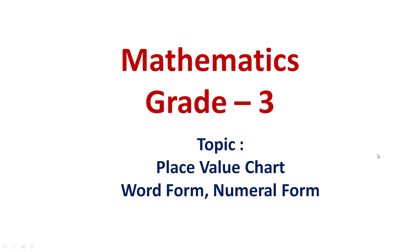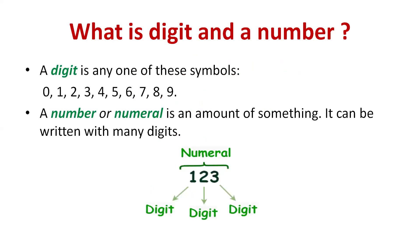Before that, I want to talk about the digit and the number. A digit is any one of these symbols — that is 0, 1, 2, 3 up to 9. These single numbers are the digits. And a number or numeral is an amount of something. It can be written with many digits. Like we have taken 3 digits — 1, 2, and 3 — and made a numeral which is 123. So this is a 3-digit number, a numeral or a number.